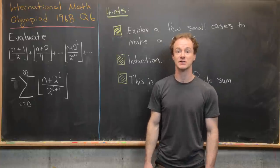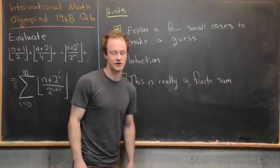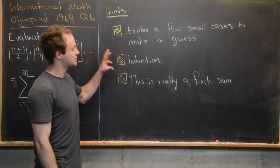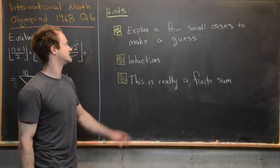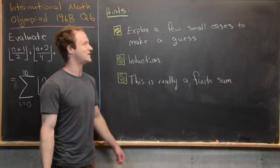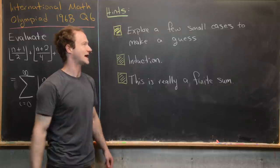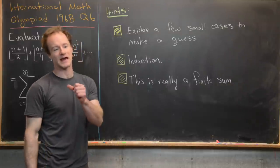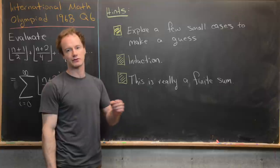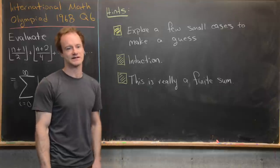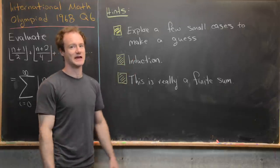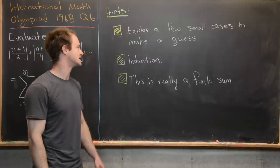Before we look at a solution, I want to give you some hints so you can try it out on your own. I've got three hints here. The first is to explore a few small cases to make a guess — like the n = 1, 2, 3, 4 cases. It's pretty easy to make a guess in this case.